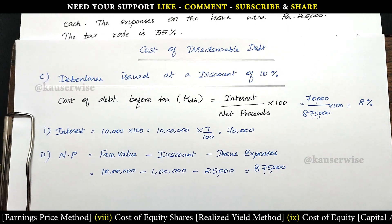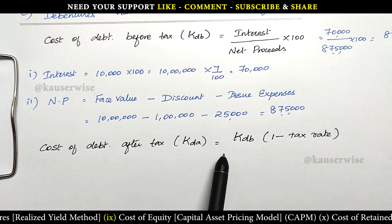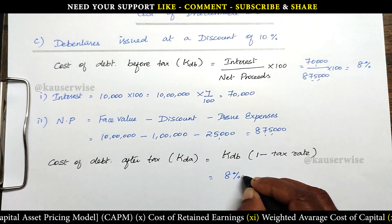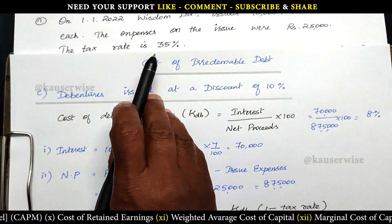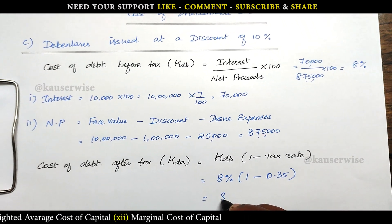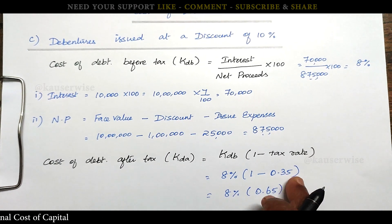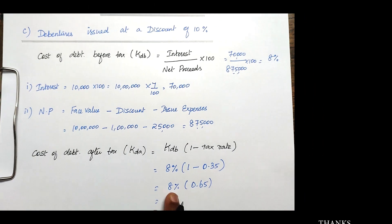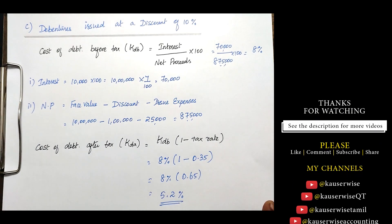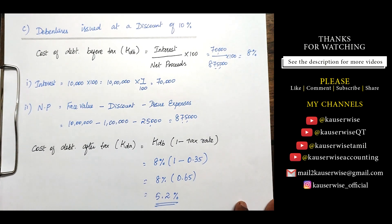Now the cost of debt after tax for the discount case. KDA equals cost of debt before tax into 1 minus tax rate. Cost of debt before tax is 8 percent. Tax rate is 35 percent, that is 0.35. So 8 percent into 1 minus 0.35 equals 8 into 0.65, giving 5.2 percent. This is the way to calculate cost of debentures issued at par, at premium, and at discount.